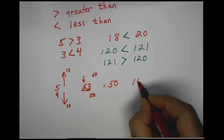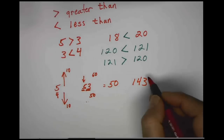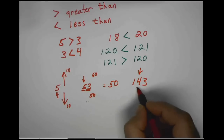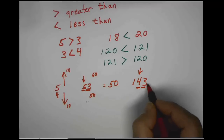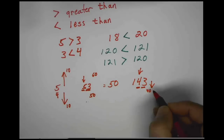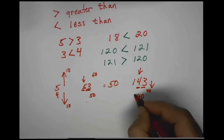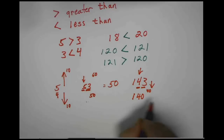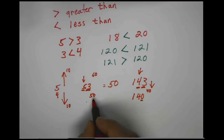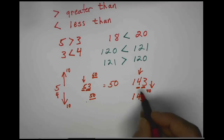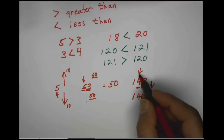The same is true if we have 143, rounding to the nearest 10. Again, we compare the 4 and the number to the right. 3 is less, so it's going to round down to the next 10 below. So 43 rounds to 40. Everything in front stays the same, so we still have the 100 there. Everything behind goes to 0. So 143 rounded to the nearest 10 is 140.